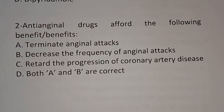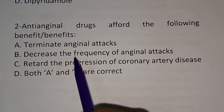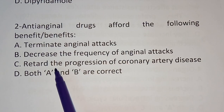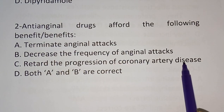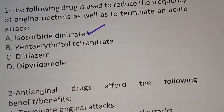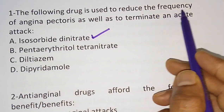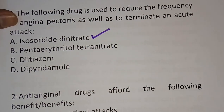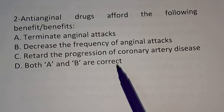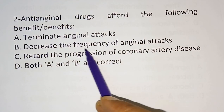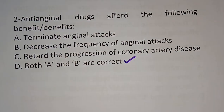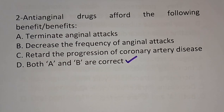Second question: anti-anginal drugs afford the following benefits. Options are: A) terminate anginal attack, B) decreases the frequency of anginal attack, C) retard the progression of coronary artery disease, D) both A and B. As seen in question one, the drug reduces frequency and terminates acute attack, so the correct answer is option D, both A and B.